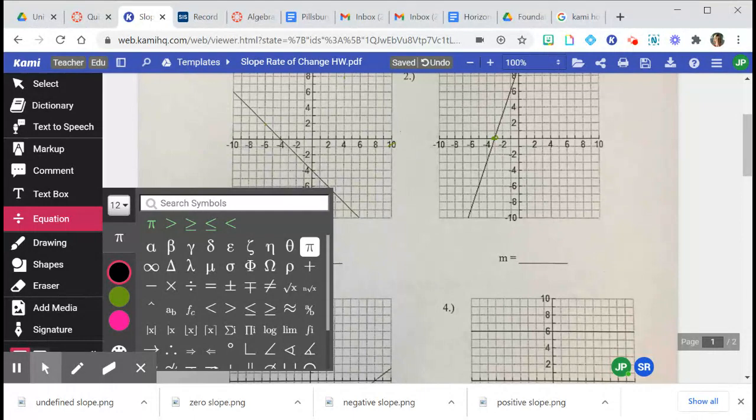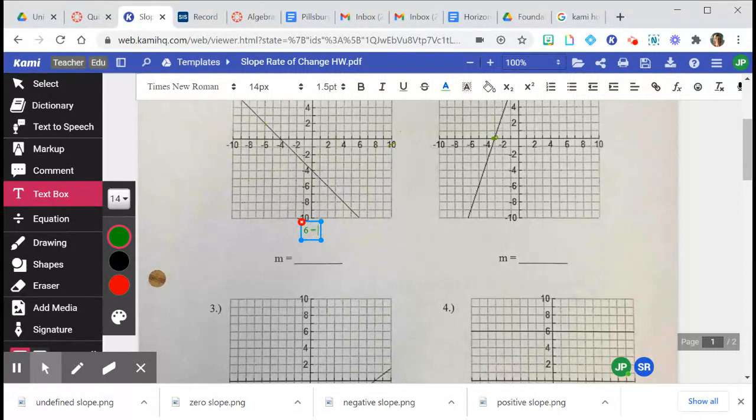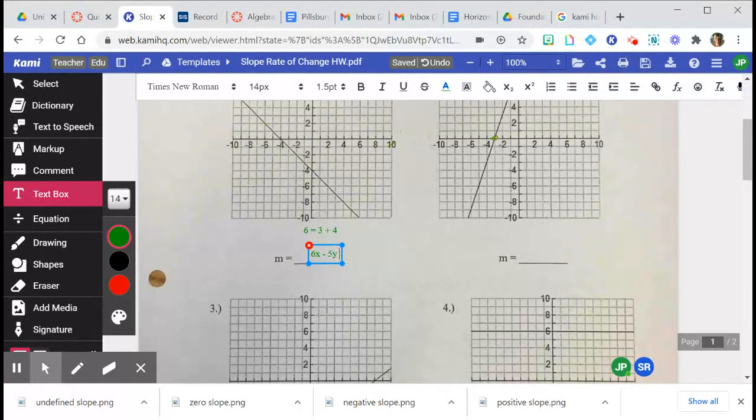The text box is your friend. The majority of things you're gonna do is just click and then you can type 6 equals 3 plus 4. You can do another text box right below it and you can say 6x minus 5y equals 24. It's way faster than trying to write it out with your pen and to draw it. You can erase them if it's not what you want it to do.